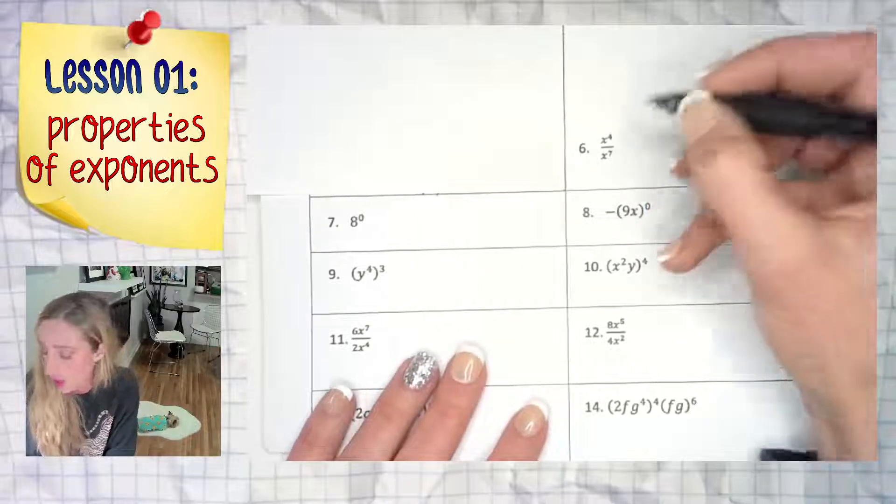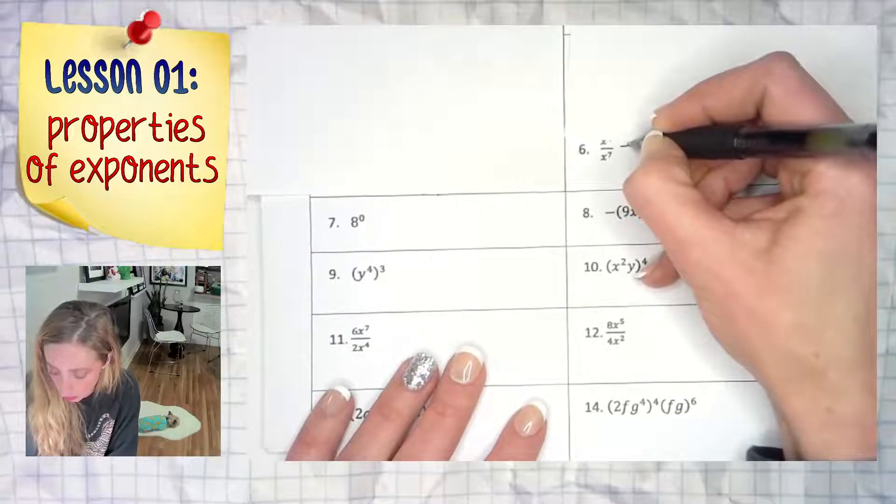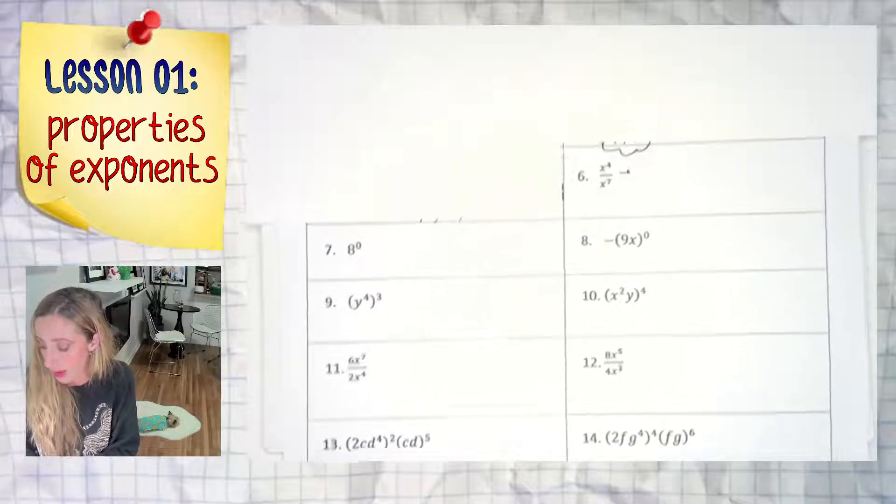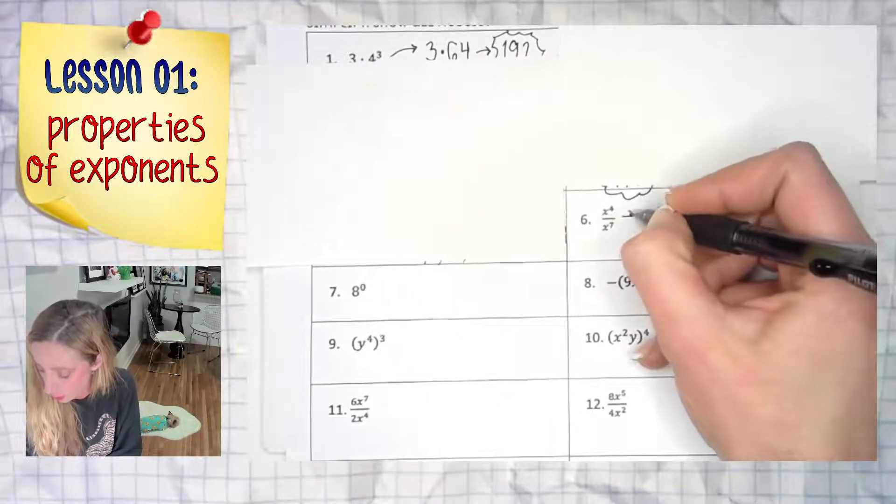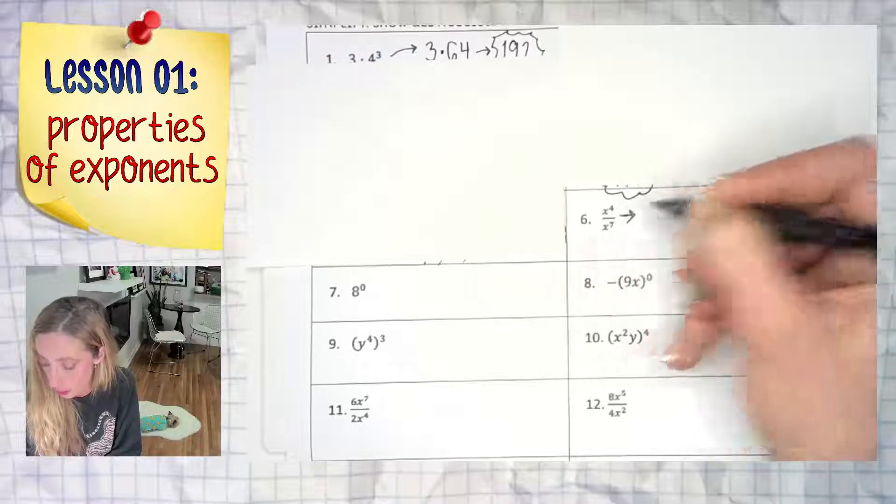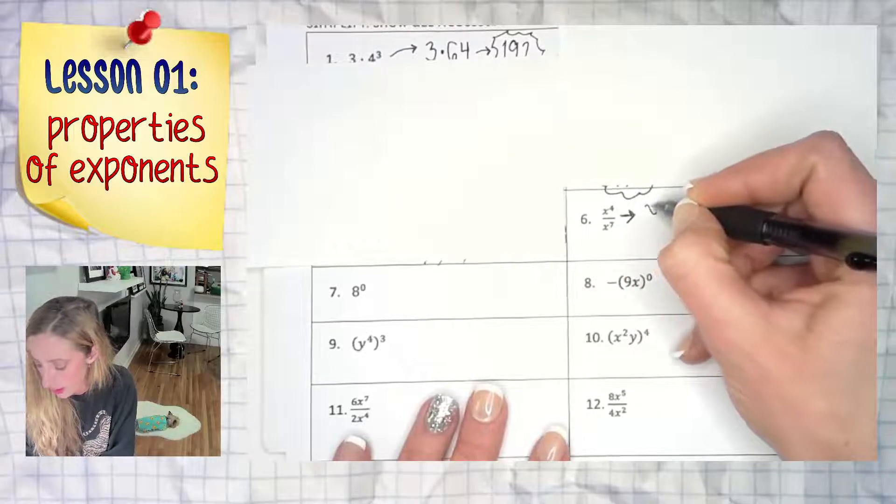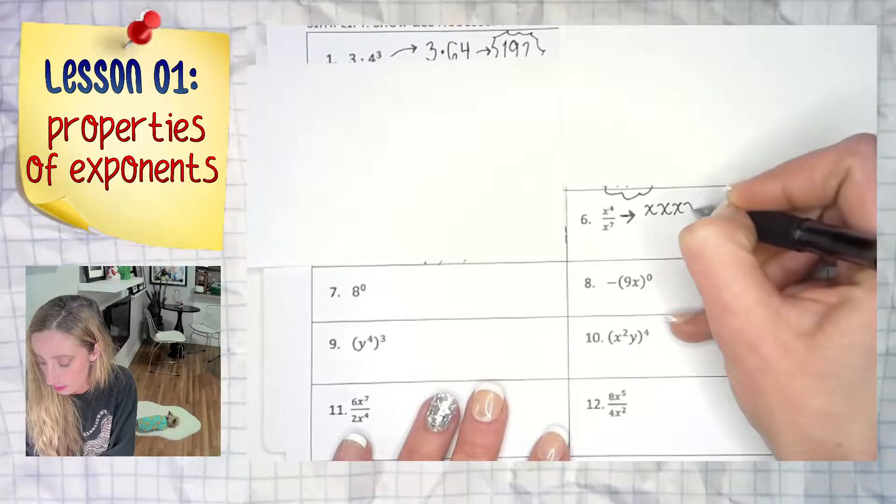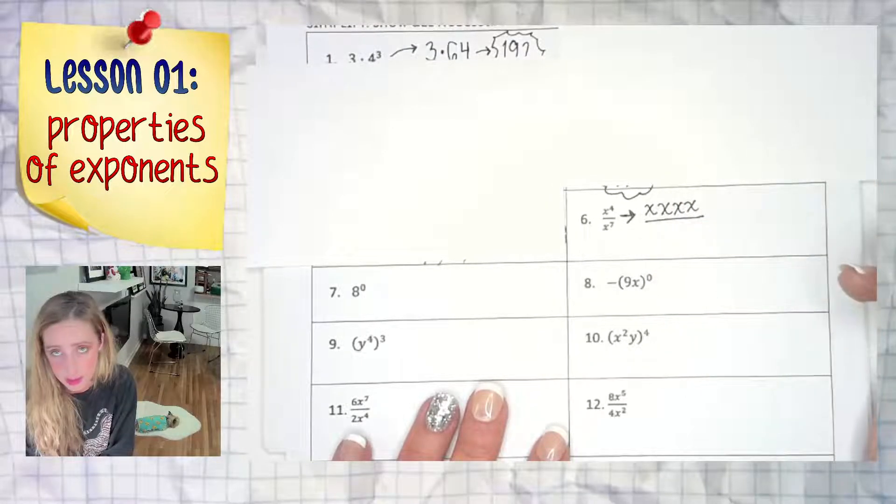I think that's a little ridiculous. Instead, you could just know the answer is one over x to the third right off the bat. But breaking it down a little bit: x to the fourth power means x times itself four times, and x to the seventh, you guessed it, x times itself seven times.